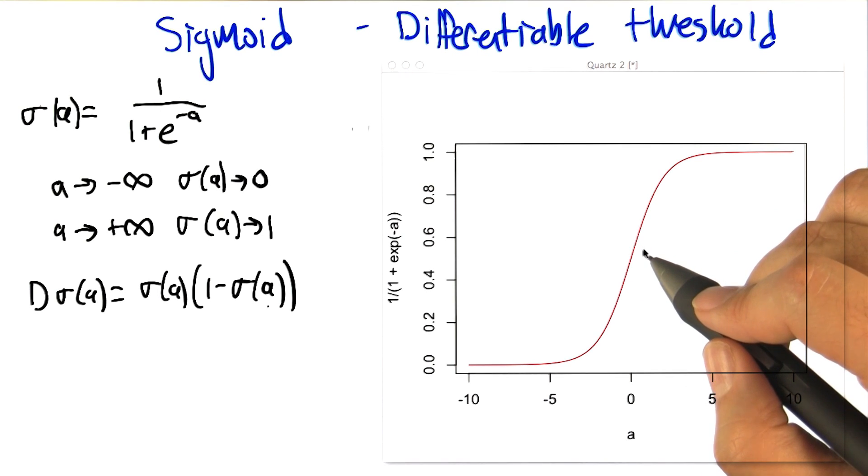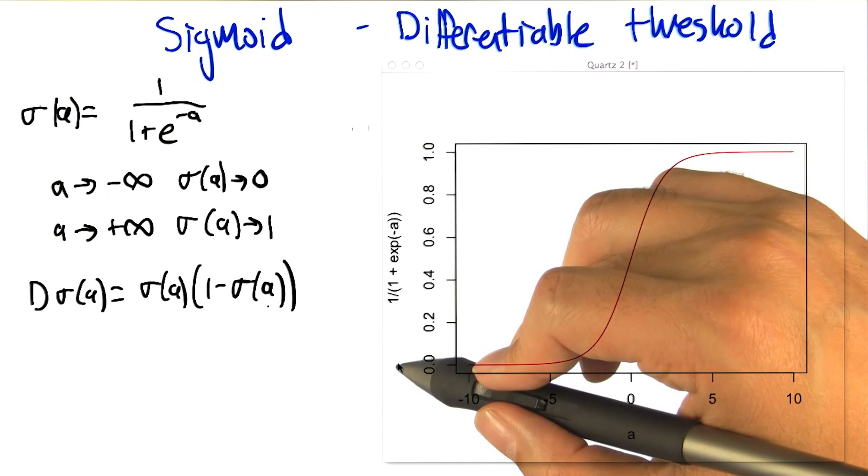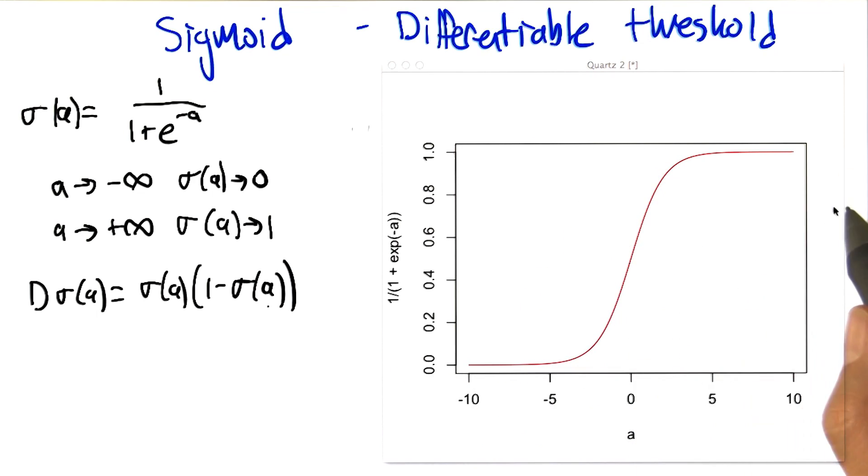Yeah, and there's other ways that are also nice. So the main properties here are that as activation gets very negative, it goes to zero, as activation gets very positive, it goes to one, and there's this smooth transition in between, and there are other ways of making that shape.